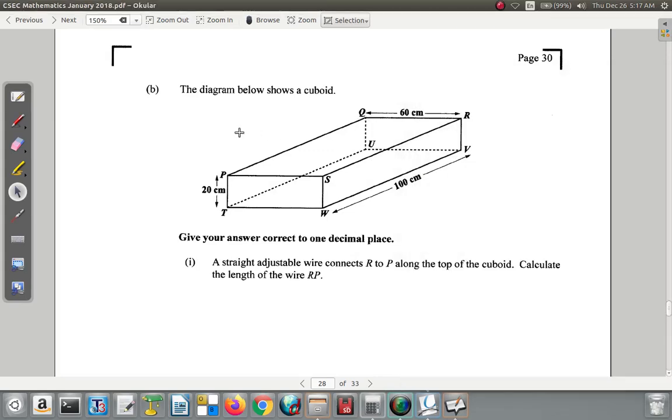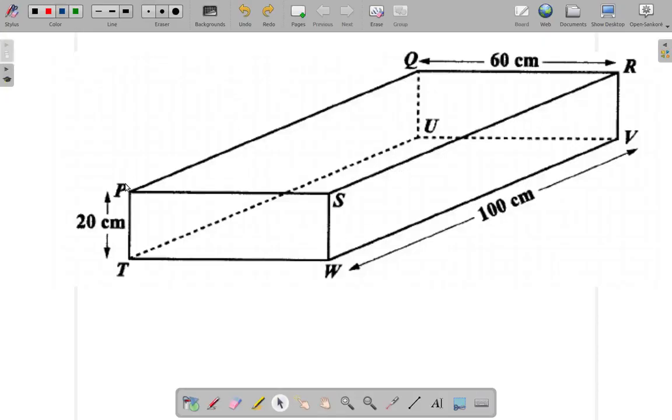Let's look at question 10b. The diagram below shows a cuboid. Give your answer correct to one decimal place. Part one: a straight adjustable wire connects R to P along the top of the cuboid. Calculate the length of the wire RP. Alright, RP. I'm looking at connecting R to P, so this is the wire RP.